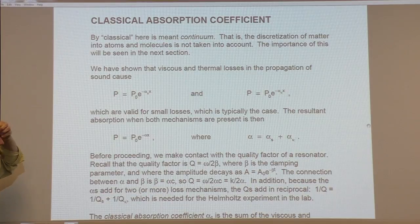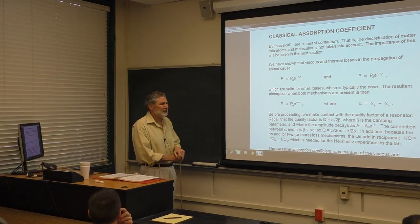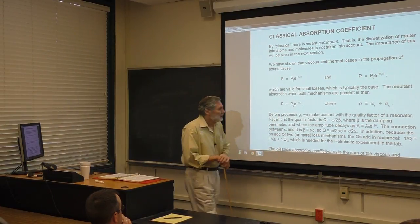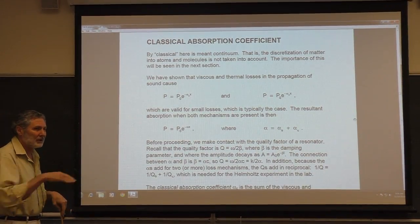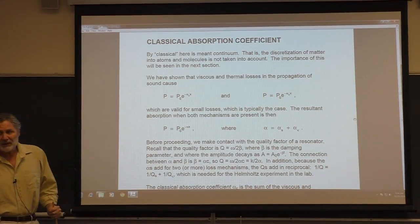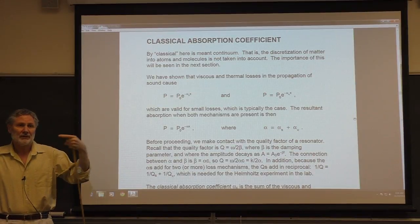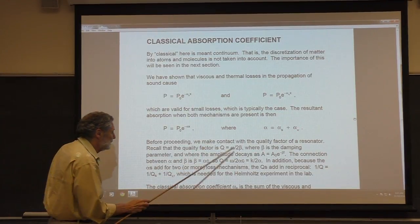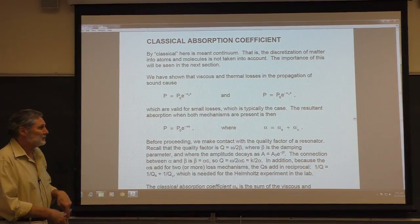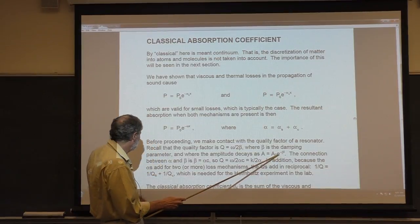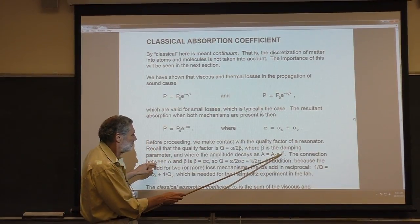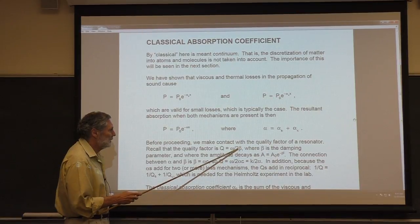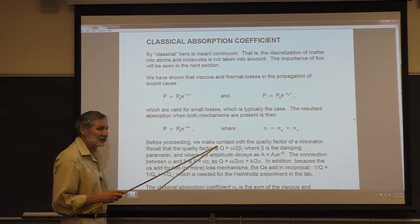Before we go on, I want to make contact with the quality factor, which is appropriate for standing waves — the quality factor for a resonator. When you excite a mode and you're not driving it, it decays exponentially in time. The decay constant, also known as the damping parameter beta, is related to Q. The bigger beta is, the lower the Q. Here's the relationship you derived last quarter in 3119.